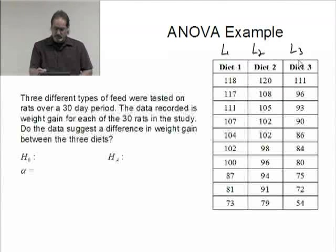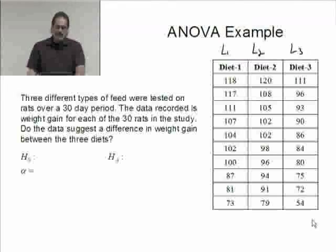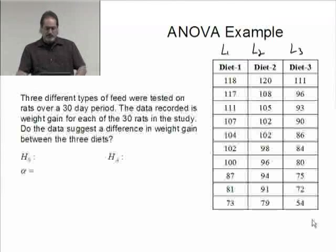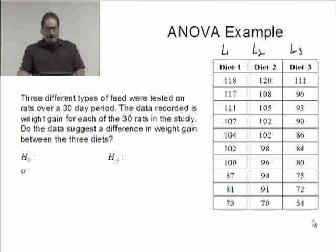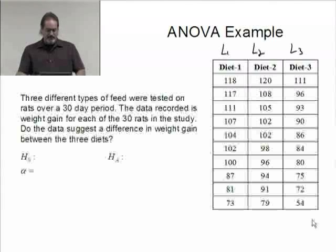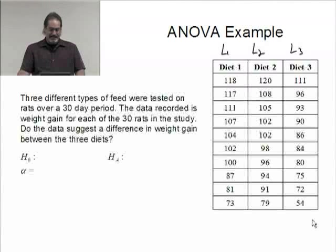This data is about three different types of feed tested on rats over a 30-day period. The data recorded is weight gain for each of the 30 rats in the study. Does the data suggest a difference in weight gain between the three diets?